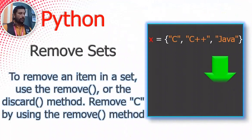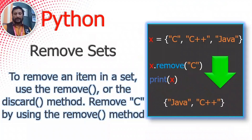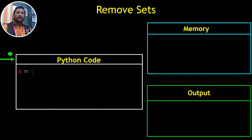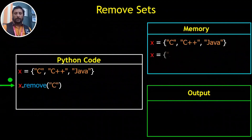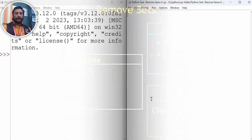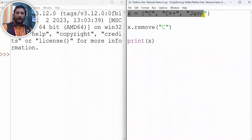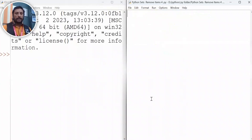You can use the remove() method to eliminate an item from the set. There is also the discard() method as another option. Let's look at the code — this is the data.remove() method. After running it, the specified item is automatically removed from the set.